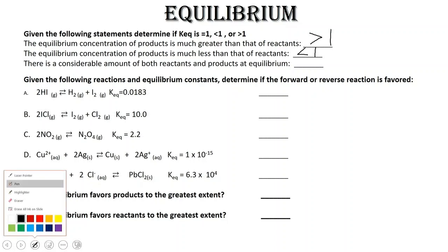Now, if there's about the same amount of both reactant and products, then we can say that K is about equal to 1.